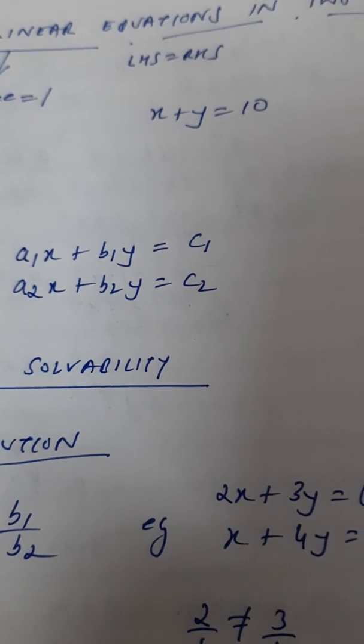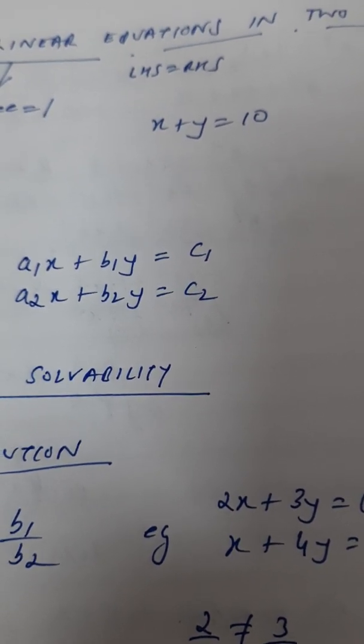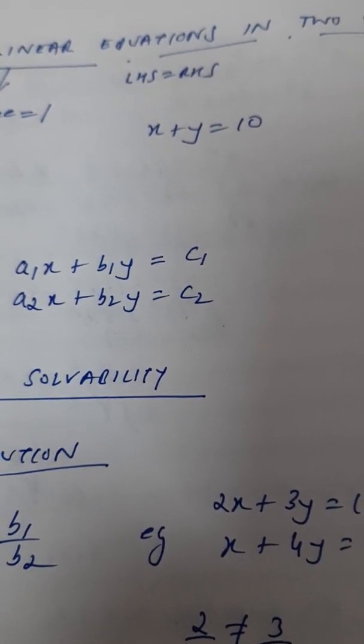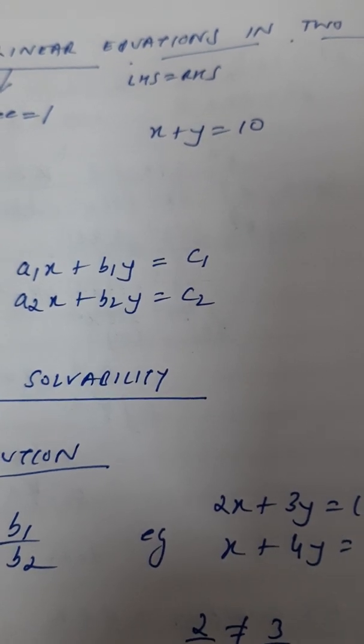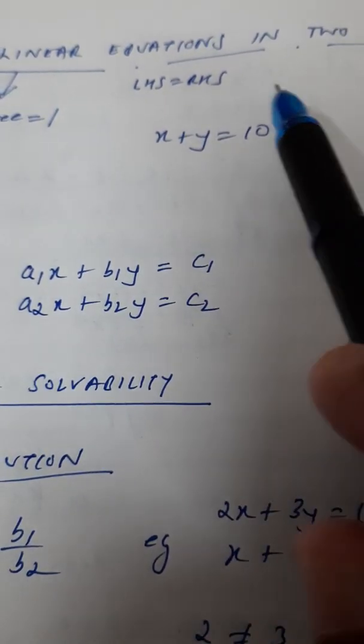Then so many decimal answers will come. 5.5, 4.5, then fractions. So, you will have infinite answers when you have only one equation.